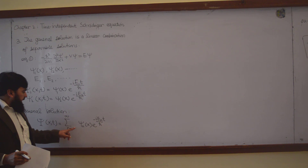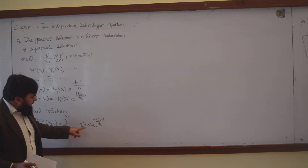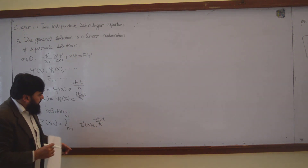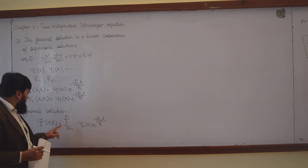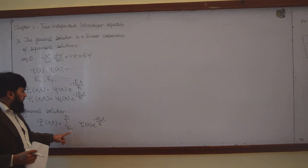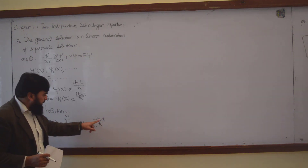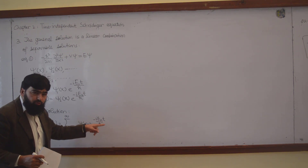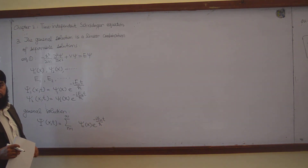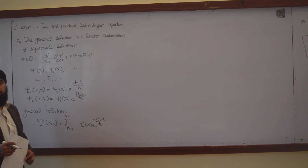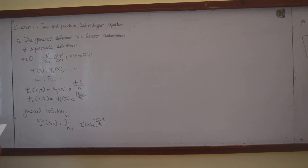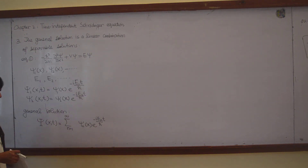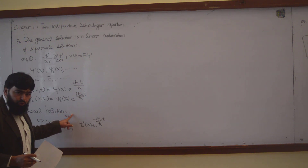When n = 1 this gives ψ₁ e^(−iE₁t/ℏ); when n = 2 it gives ψ₂ e^(−iE₂t/ℏ); n = 3, 4, and so on, all the way to infinity. This summation is the general solution.